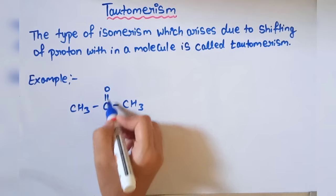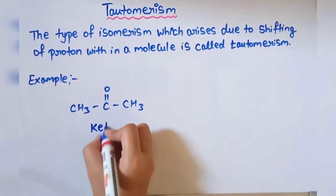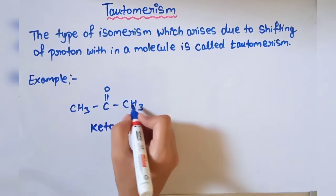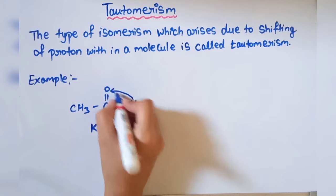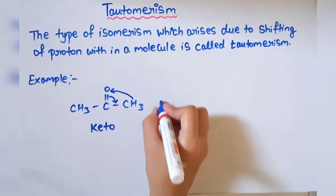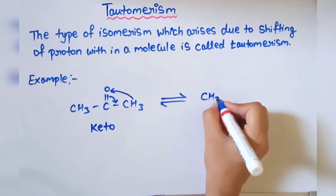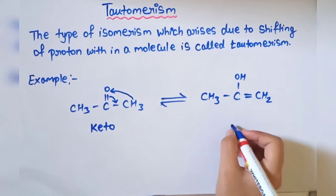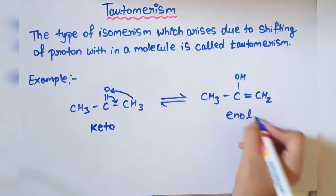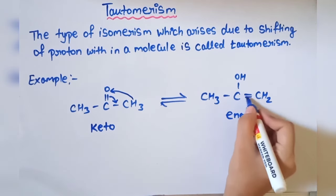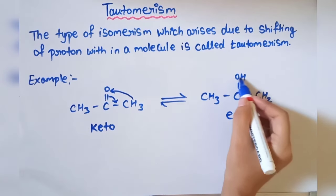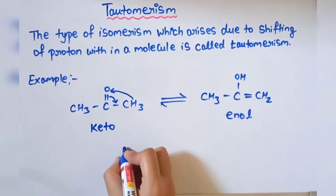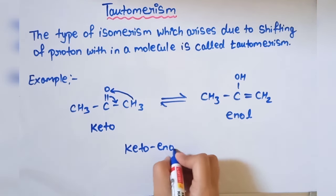See the example — here we have a ketone present, so we write this as the keto form. In this molecule, proton shifting occurs: one proton shifts from this position to another, and a double bond forms. The resulting structure is CH3–C(OH)=CH2, which is the enol form. It is called 'enol' because it has a double bond — that is 'en' from alkene — and an alcohol group — that is 'ol'. So the keto form converts into the enol form. This is called keto-enol tautomerism, and the keto and enol forms are tautomers of each other.